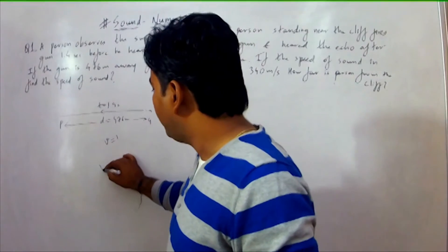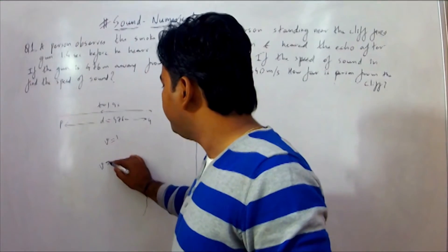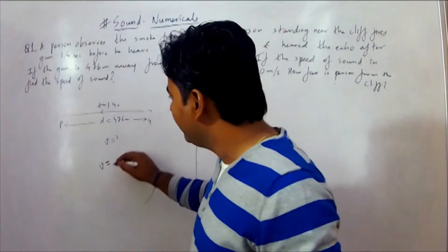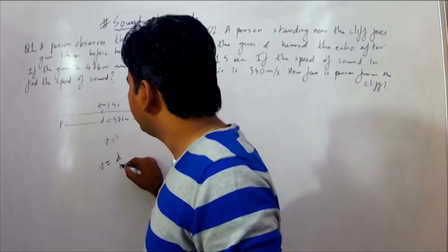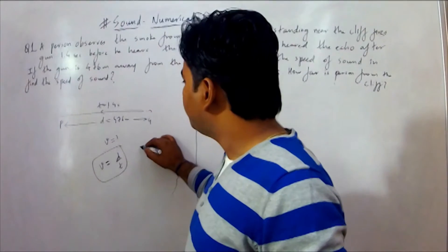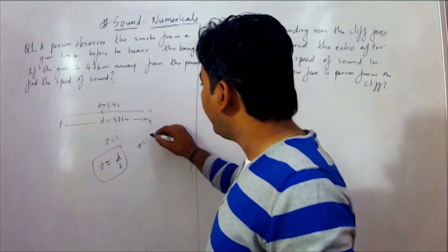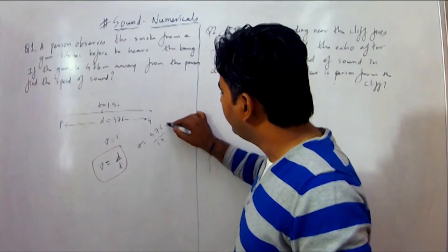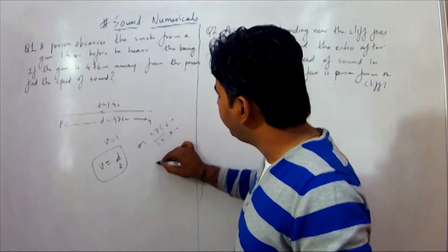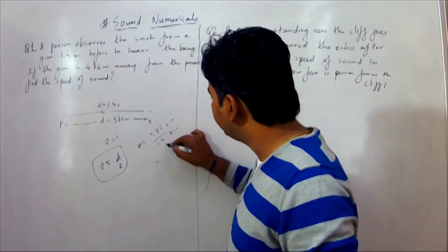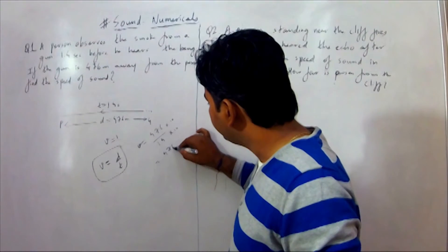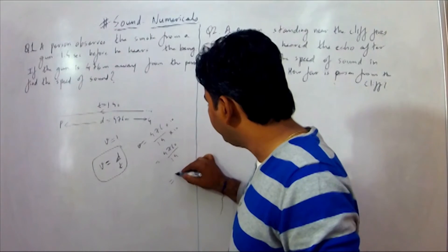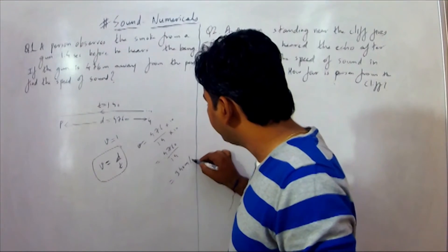We are normally using the formula: speed is equal to distance upon time. So we calculate: speed = 476 divided by 1.4. If you calculate it, you get the answer as 340 metres per second.